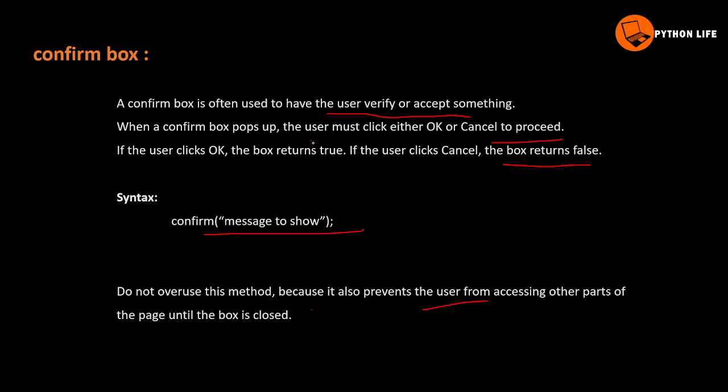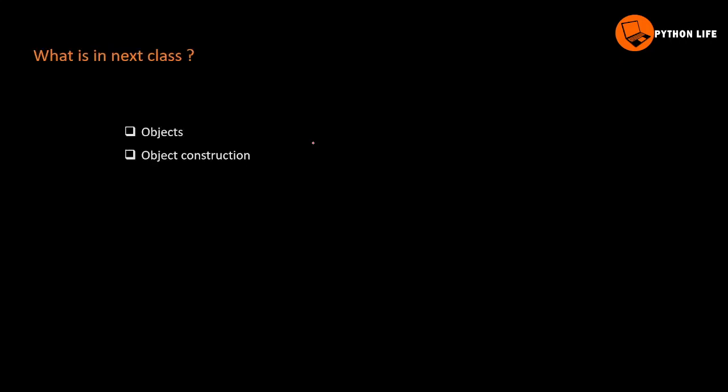You can access JavaScript. This is a security type of popup boxes. This is about confirm, alert, and prompt popup boxes. In the next class, we will cover objects and call objects. Happy learning, thank you.